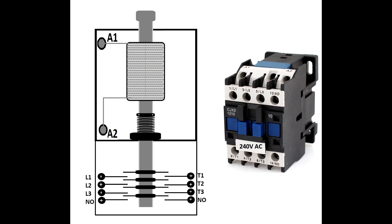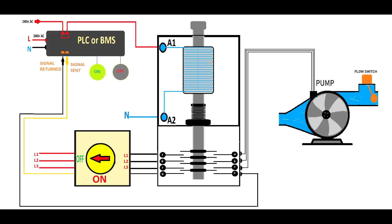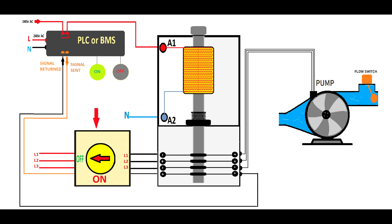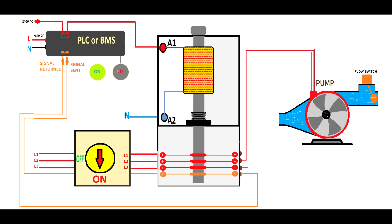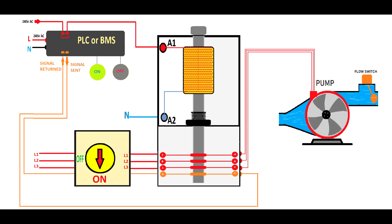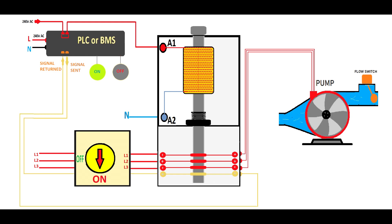This is how the contactor looks: you have a control circuit and a power circuit. As you will see in this picture, you have a programmable logic controller or a building management controller — it can even be a printed circuit board — and the signal is returned through the contactor. The BMS or PLC sends the signal through the isolating switch, it passes to the contactor and returns. This is actually a very bad installation, and I will explain why: if you trace this yellow-orange signal, you will see that the BMS sends the signal through the isolating switch to the contactor, but technically it does not come back.